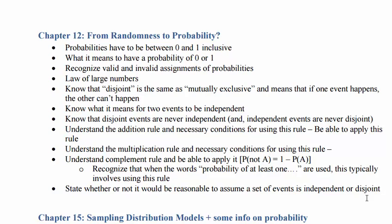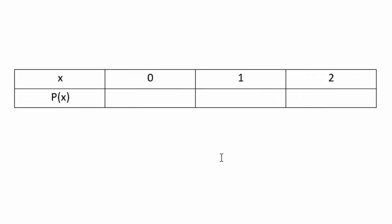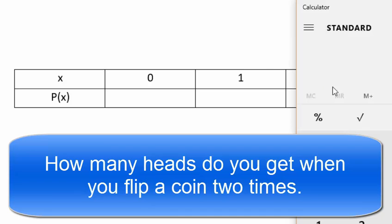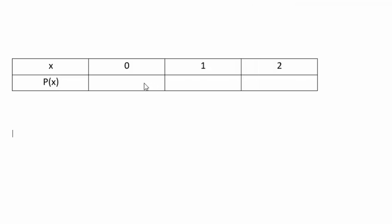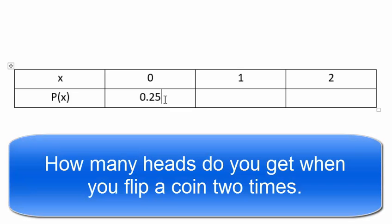Let's look at a small table and compute some probabilities. We want to figure out the probability of getting zero, one, or two heads when we flip a coin twice. To get zero heads we need tails and tails, so we multiply: the probability of getting tails and tails gives us 0.25.